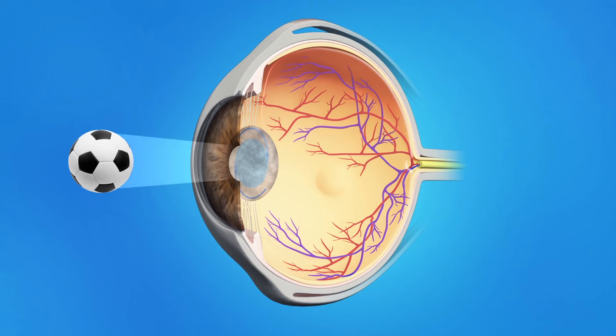As with a cataract, when light passes through this cloudy capsule, it no longer focuses clearly on the retina, and objects appear hazy or blurred.